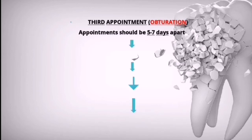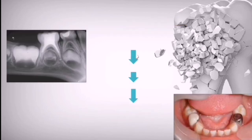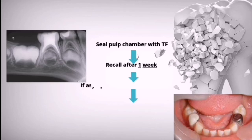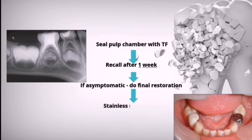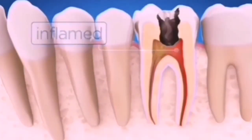The third appointment is scheduled five to seven days after the second. Remove the temporary filling, irrigate and dry the canals well, then obturate the canals. Seal with a temporary filling and recall the patient after one week. If the patient is completely asymptomatic, proceed with the final restoration and a stainless steel crown.